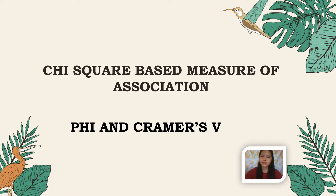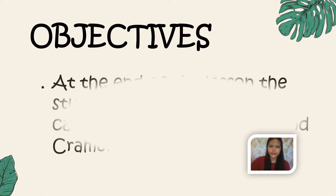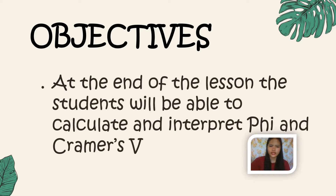Measures of association are descriptive statistics that summarize the overall strength of the association between two variables. The objective of today's lesson is that by the end, you will be able to calculate and interpret phi and Cramér's V. To do so, you must first calculate the chi-square.